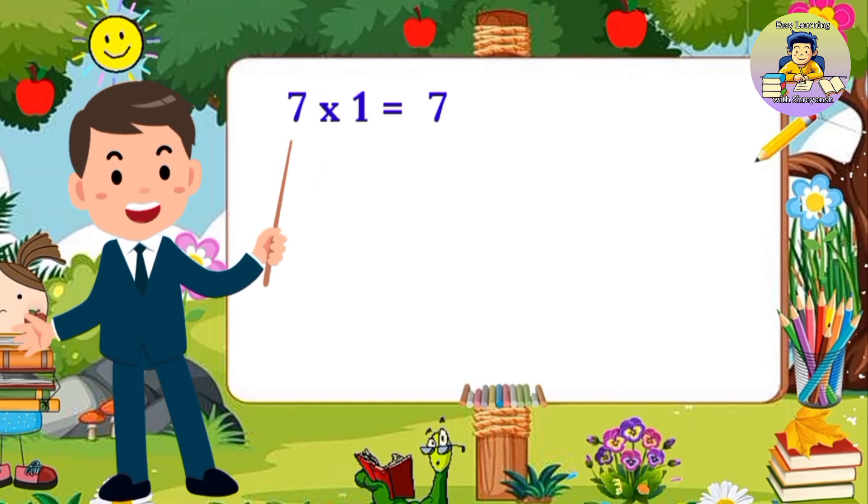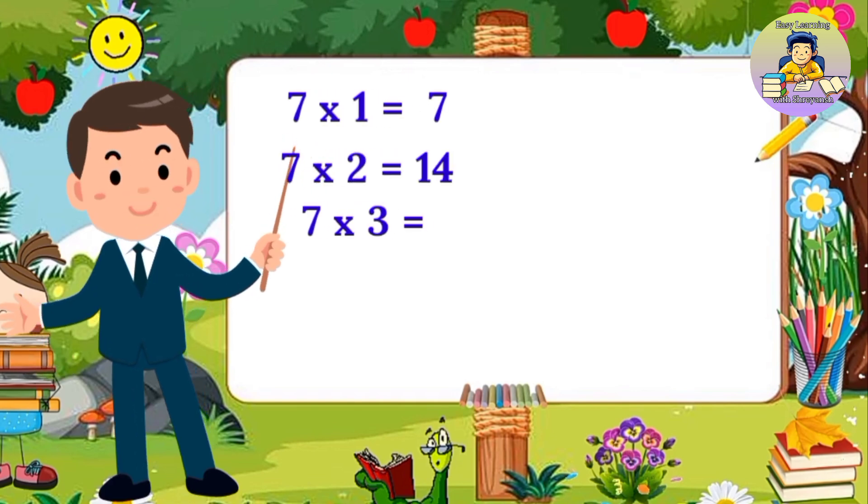7, 1's are 7. 7, 2's are 14. 7, 3's are 21.